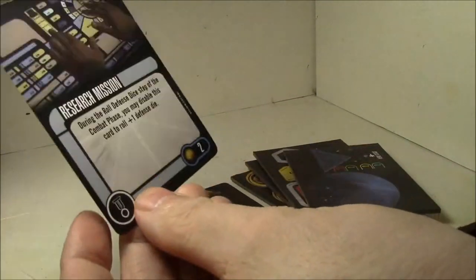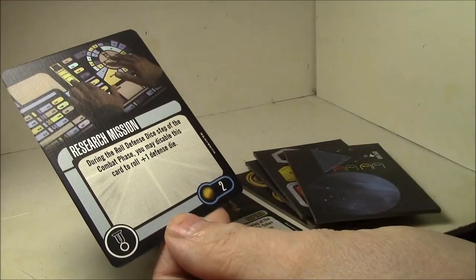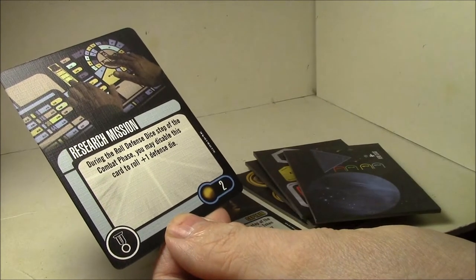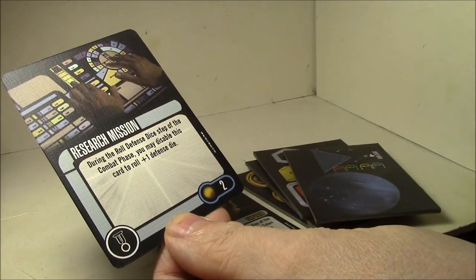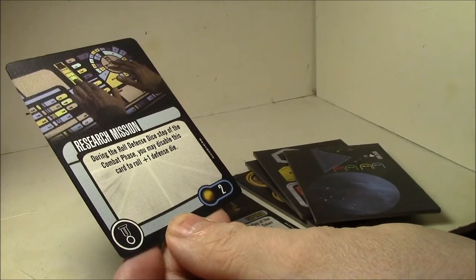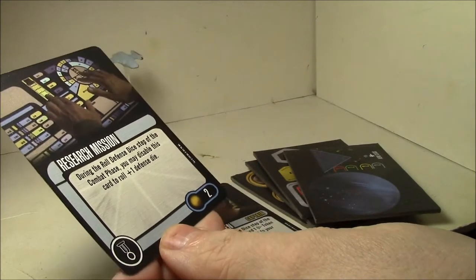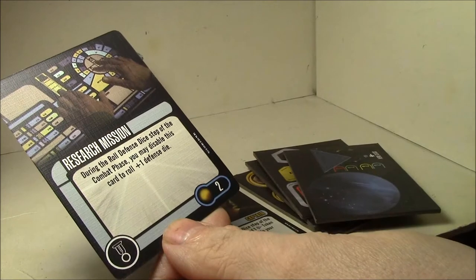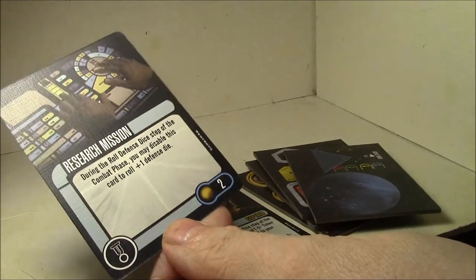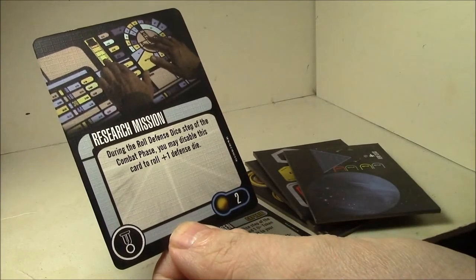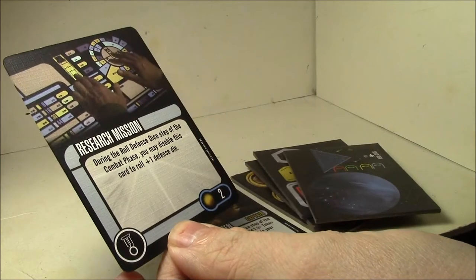Research Mission is an Independent elite talent. During the roll defense dice step of your combat phase, you may disable this card to roll one plus one defense die. That's really good. It's a disable, it's not an action, and it's only two points. That's actually a pretty efficient card, not bad at all.